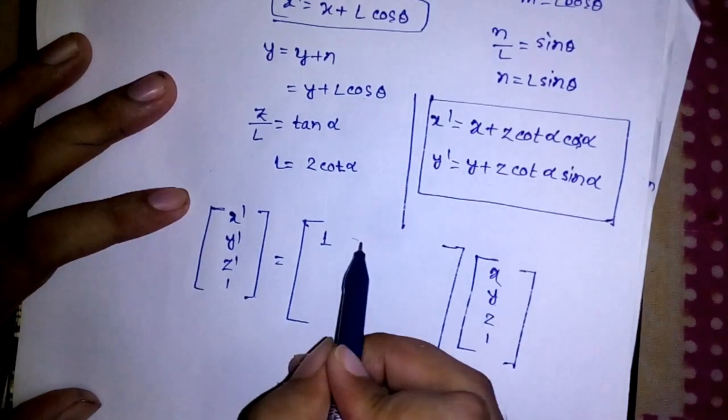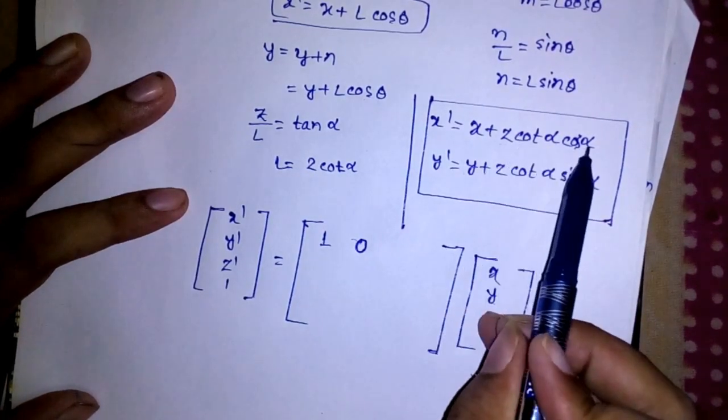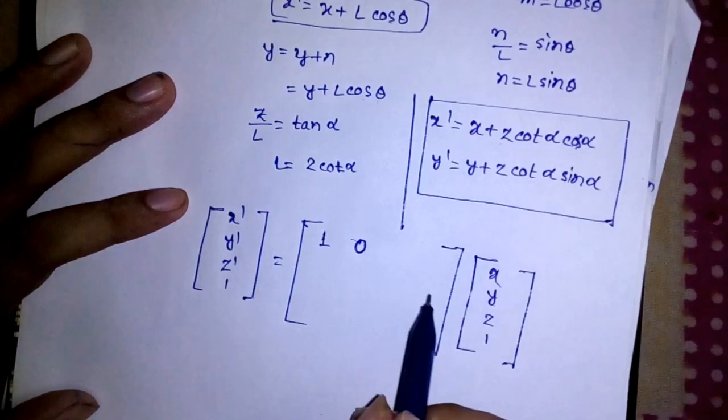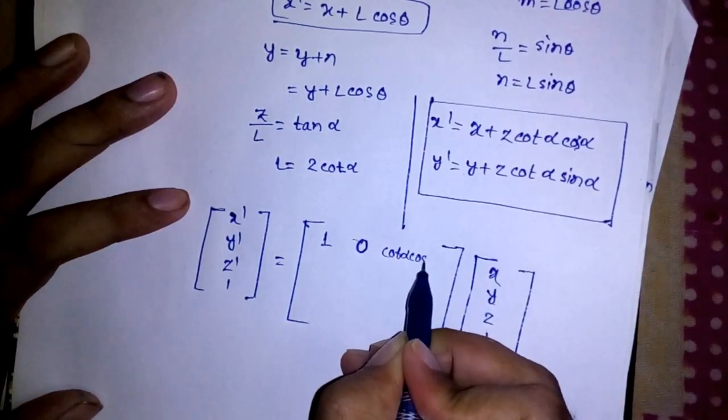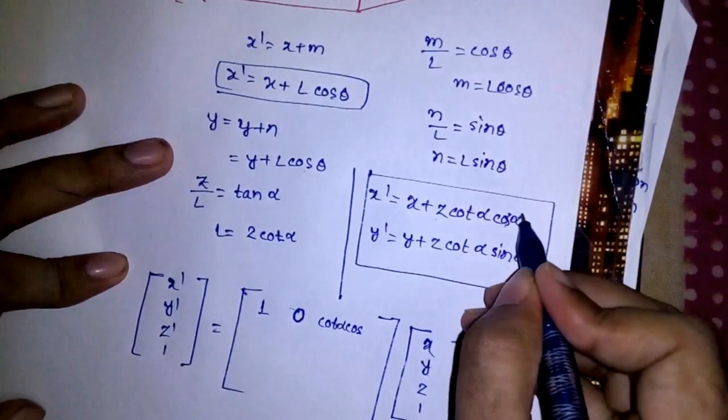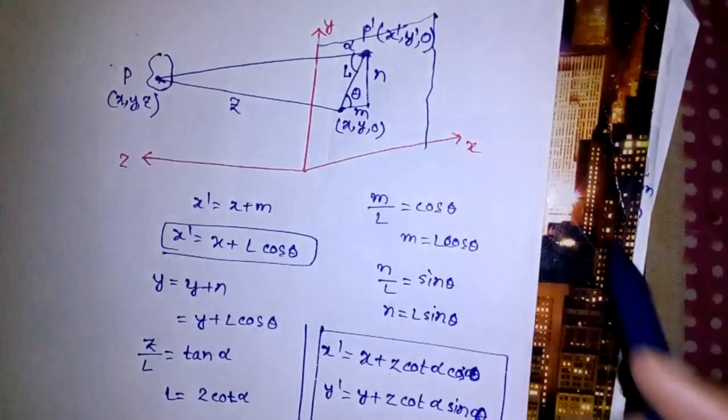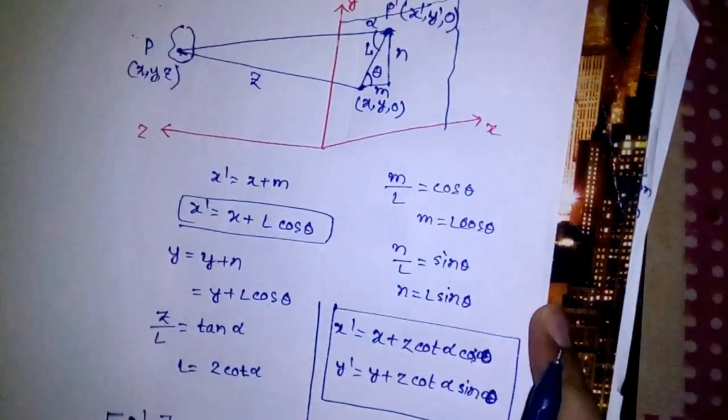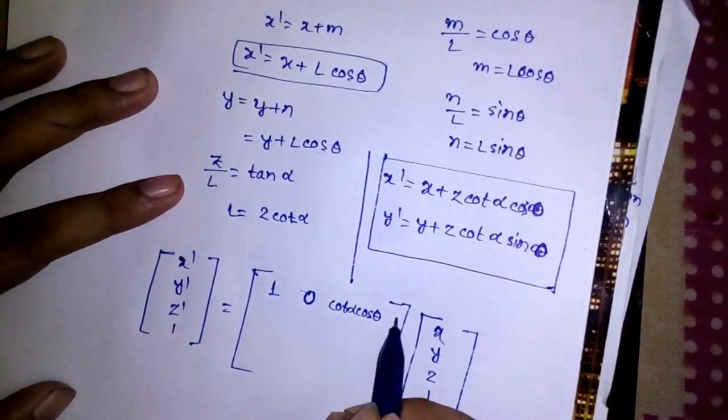It has no Y, so I can write 0 here. It needs Z cot alpha cos theta, so I can write cot alpha cos theta because we are computing that from this triangle, the smaller triangle. This is actually theta. We don't need this one, so this will be 0.